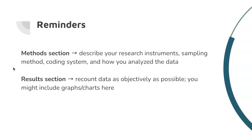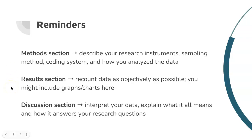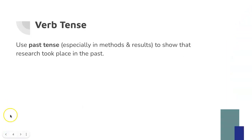After that, the results section is where you are trying to recount your data as objectively as possible. This is where you might include graphs or charts to help visualize your data. And the discussion section is where you are interpreting your data — this is where you get to explain what it all means and how it connects to your research questions.